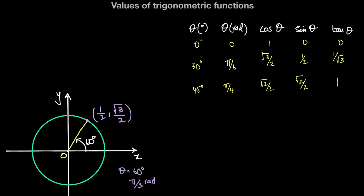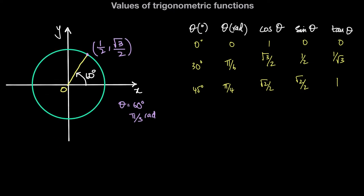When theta is equal to 60 degrees, or pi over 3 radians, the x-coordinate of the point on the unit circle — cosine of theta — is 1 over 2, and the y-coordinate — sine of theta — is square root of 3 over 2. The ratio of the y-coordinate to the x-coordinate, sine theta divided by cosine theta, is square root of 3. So tan theta is equal to square root of 3.